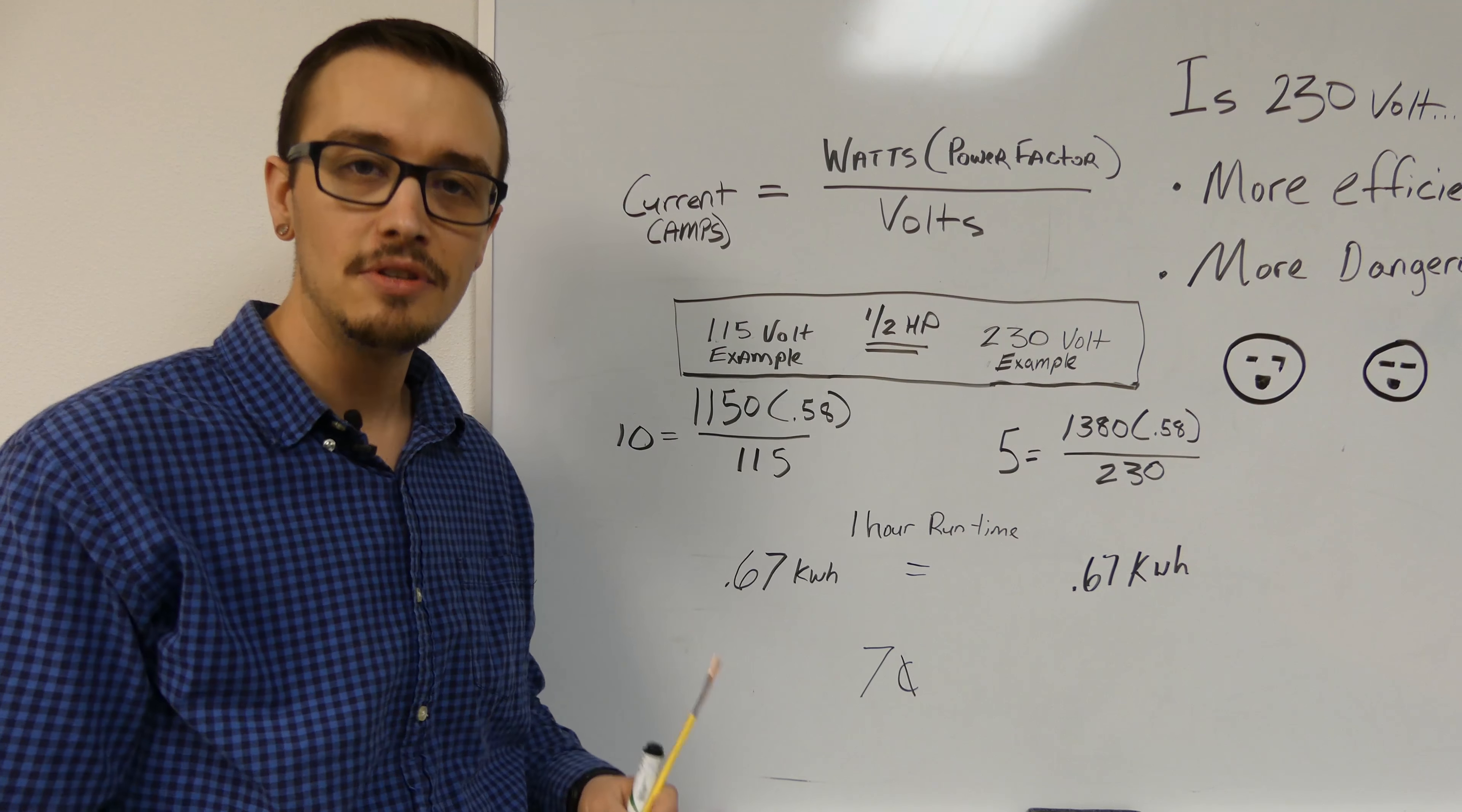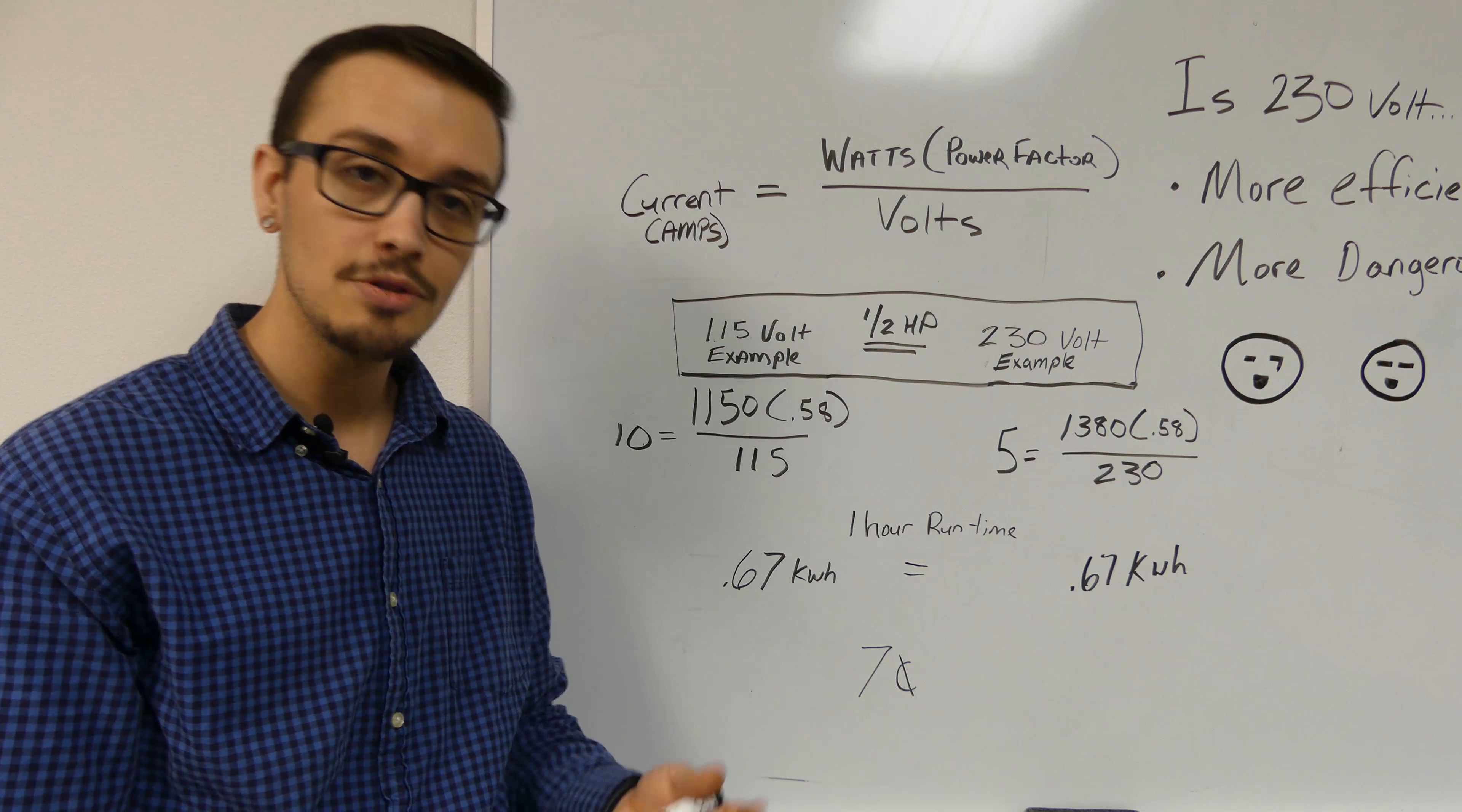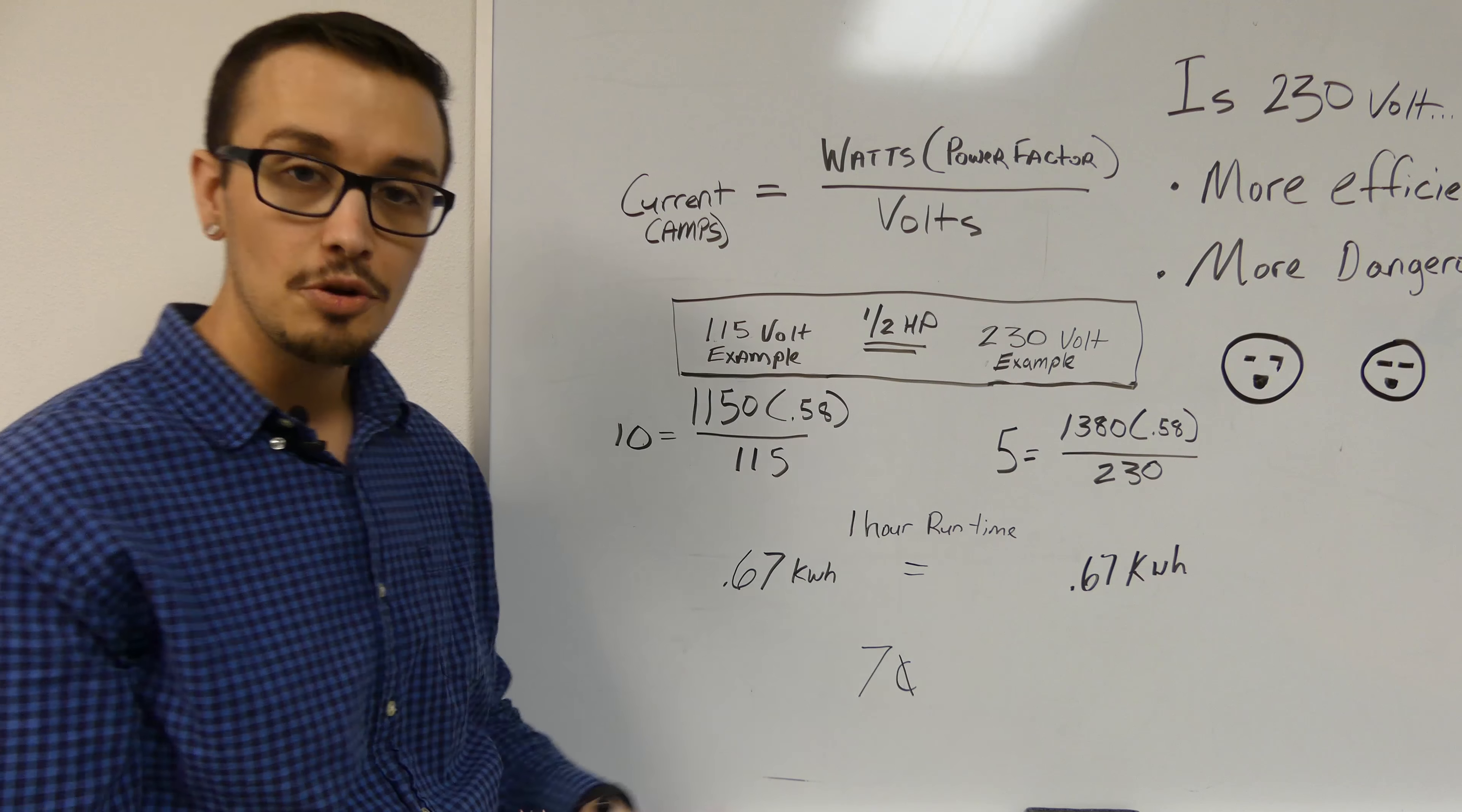Let's jump into this first myth: is 230 volt more efficient? I decided we'd bring a few numbers in here to show you how this all relates. When it comes to energy or electricity, when a light bulb is turned on or a motor is running, that's all considered work. In electricity, work is measured in watts or kilowatts. When you pay your electricity bill, they are keeping track of the kilowatt hours that you use.